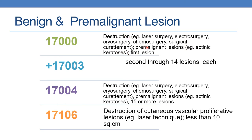For the destruction of premalignant lesions, the first lesion uses code 17000. The next code is an add-on code, +17003, for destruction of premalignant lesions from the second through 14th lesion — report one unit per additional lesion. The next CPT is 17004, destruction of premalignant lesions, 15 or more lesions.